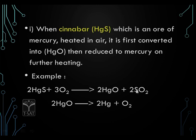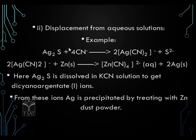Sulphur dioxide is formed and sulphur, as an impurity, is removed in this process. The mercuric oxide which is formed then gets reduced into mercury and oxygen. Even displacement reactions can be used here.